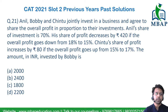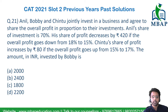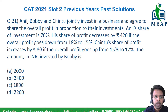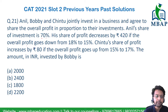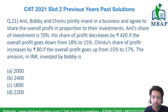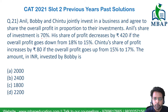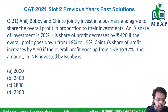The next question: Anil, Bobby and Chintu jointly invest in a business and agree to share the overall profit in the proportion of their investment. Anil's share of investment is 70%. His share of profit decreases by 420 rupees if the overall profit goes down from 18% to 15%. Chintu's share of profit increases by 80 rupees if the overall profit goes up from 15% to 17%. Find the amount invested by Bobby.